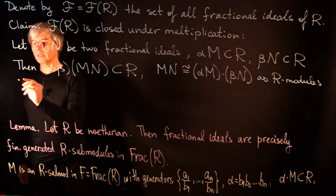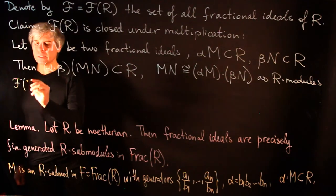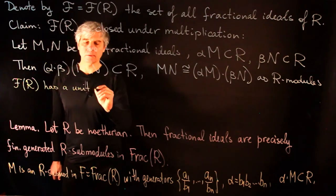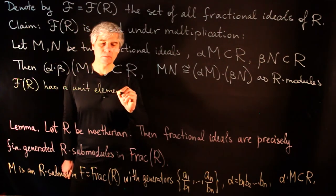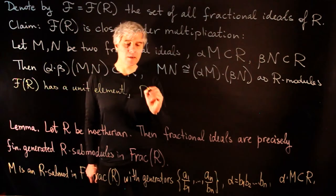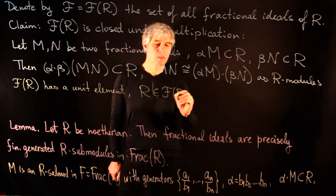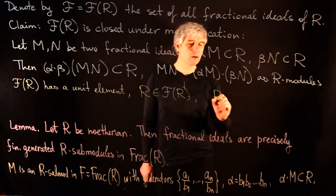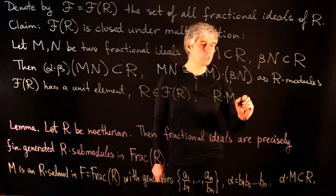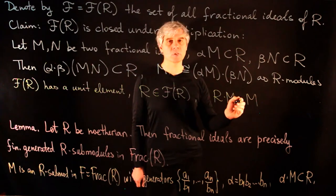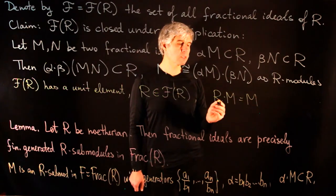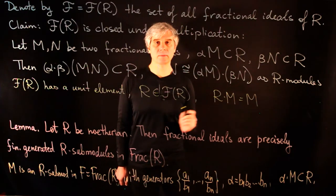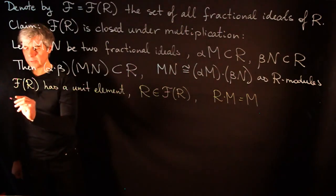We point out that the set of fractional ideals has a unit element, which is R. Indeed, for any fractional ideal M, R·M = M. One inclusion is obvious because M is an R-submodule, and the opposite inclusion holds because R contains a unit. This motivates the following definition: fractional ideals A and B are inverses of each other if A·B = R.